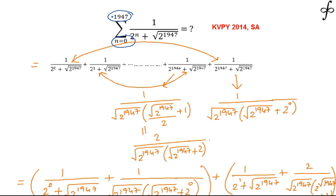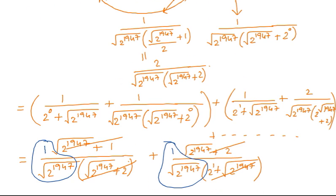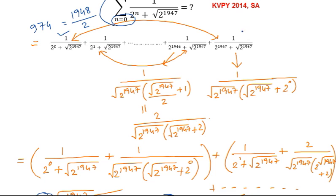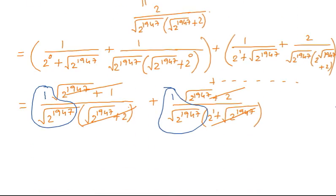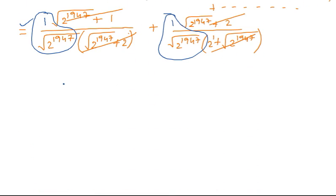Starting from n equal to 0 up to n equal to 1947, there are a total of 1948 terms. The number of pairs is half of that, which is 974. So 974 pairs are formed by pairing the first with the last, second with second-from-last, third with third-from-last, and so on. Every pair gives the same value, so the final answer is 974 divided by root of 2 to the power 1947.